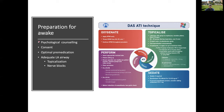When preparing for awake intubation, psychological counseling and patient consent are very important. Give optimal pre-medication — always give glycopyrrolate to reduce secretions. A good idea is to give low-dose fentanyl and midazolam, or dexmedetomidine depending on availability and expertise. Topicalization method is your choice — spray, nebulization, or nerve blocks — but whatever method used, wait for the contact time of local anesthetic to act. For nebulization, wait a little longer; for blocks, effect comes within 5-10 minutes.